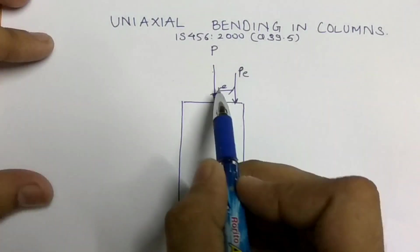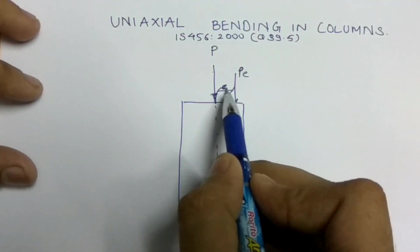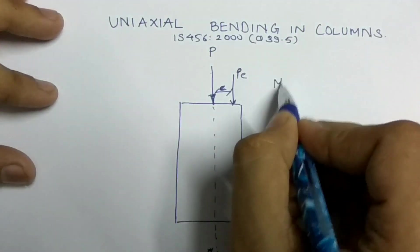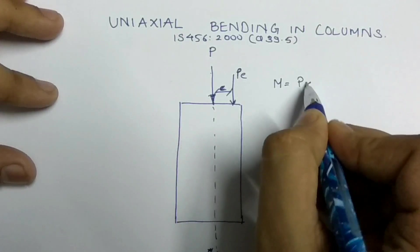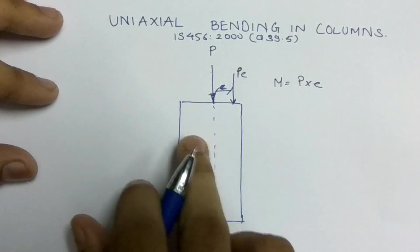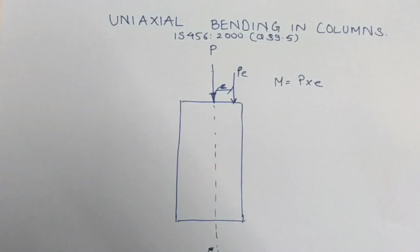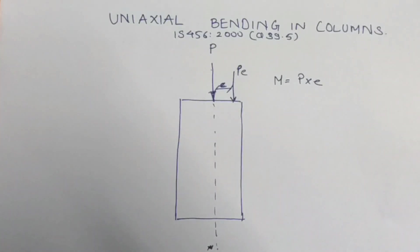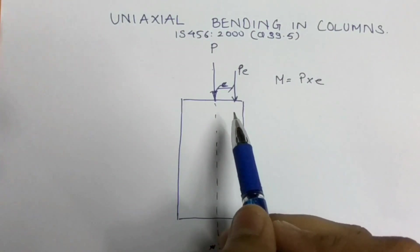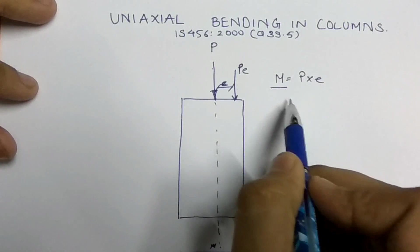The load acts with eccentricity — we call it 'e'. So what happens is this moment is generated, and this is the value of P into e. This moment is generated when the column and slab are cast as monolithic. So this moment generates an eccentric load, that is, a moment plus a compressive force that acts on the column.